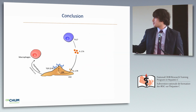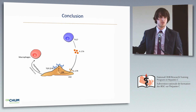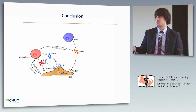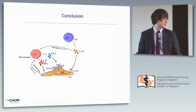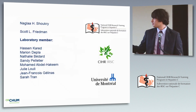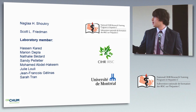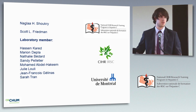Additionally, stellate cells in response to IL-17A produce chemokines important in the recruitment of pro-inflammatory macrophages, which are further activated by IL-17A to produce more pro-fibrotic cytokines including TGF-beta, showing that IL-17A is a key pro-fibrotic cytokine. I would like to thank the organizers, my mentor Nagla Shoukri, our collaborator Scott Friedman, the members of my laboratory, and the NCRTP. I will be happy to answer any questions.